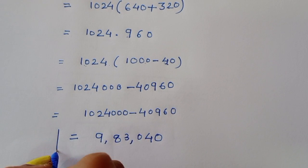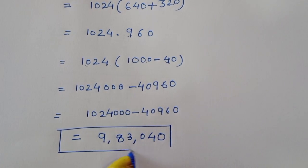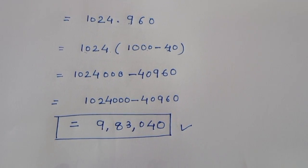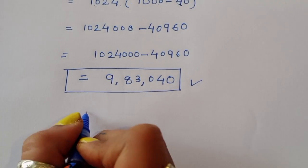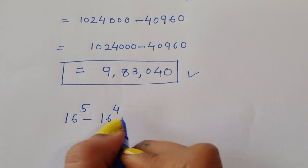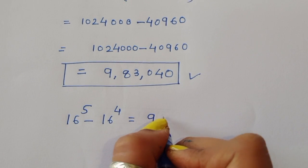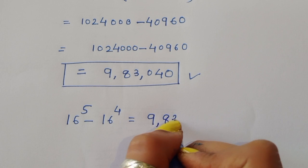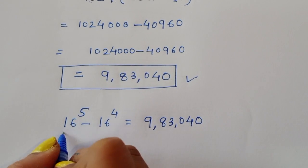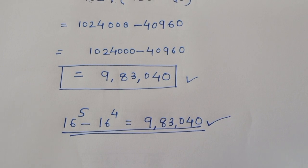We are getting the value 983,040 and this is the correct solution. So 16 power 5 minus 16 power 4 is equal to 983,040. This is the solution. Thank you.